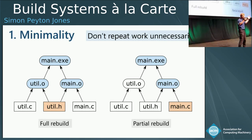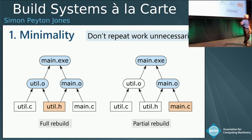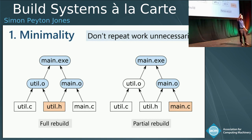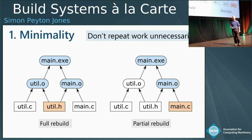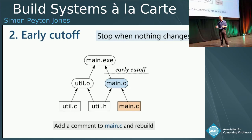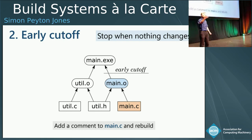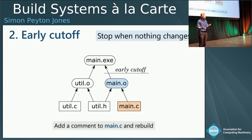Here's a little dependency tree. If I change just having rebuilt everything, and then just change make.c, I want to recompile main.c, I want to recompile main.o, but not util.o, and then I have to relink. I just want to do as little as possible. Some build systems, but not all, support something called early cutoff, which is that if you have rebuilt main.o but you just changed a comment in main so the binary is bit-for-bit identical, there's no need to relink. That's early cutoff.